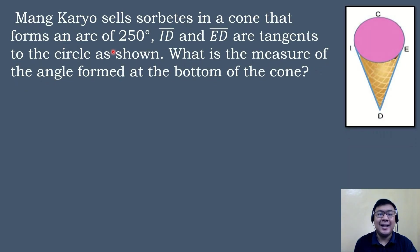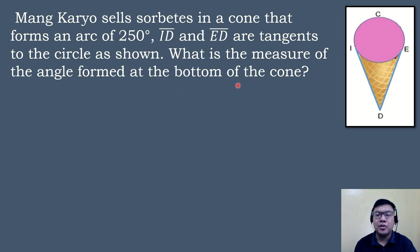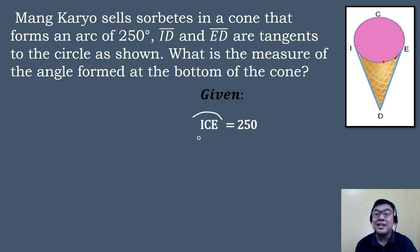So let's have our first problem. Mangkaryo sells torbetes in a cone that forms an arc of 250 degrees. Segment ID and segment ED are tangents to the circle as shown. What is the measure of the angle formed at the bottom of the cone? So we have the following given: the measure of arc ICE is equal to 250 degrees, because according to the problem, the cone forms an arc of 250 degrees.